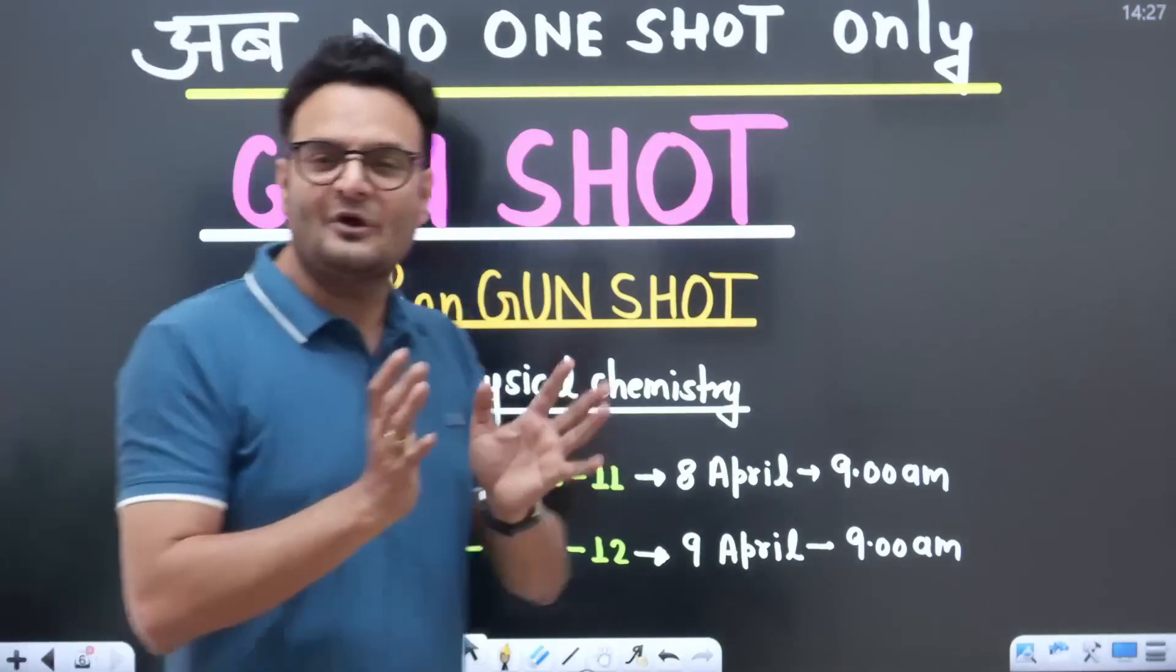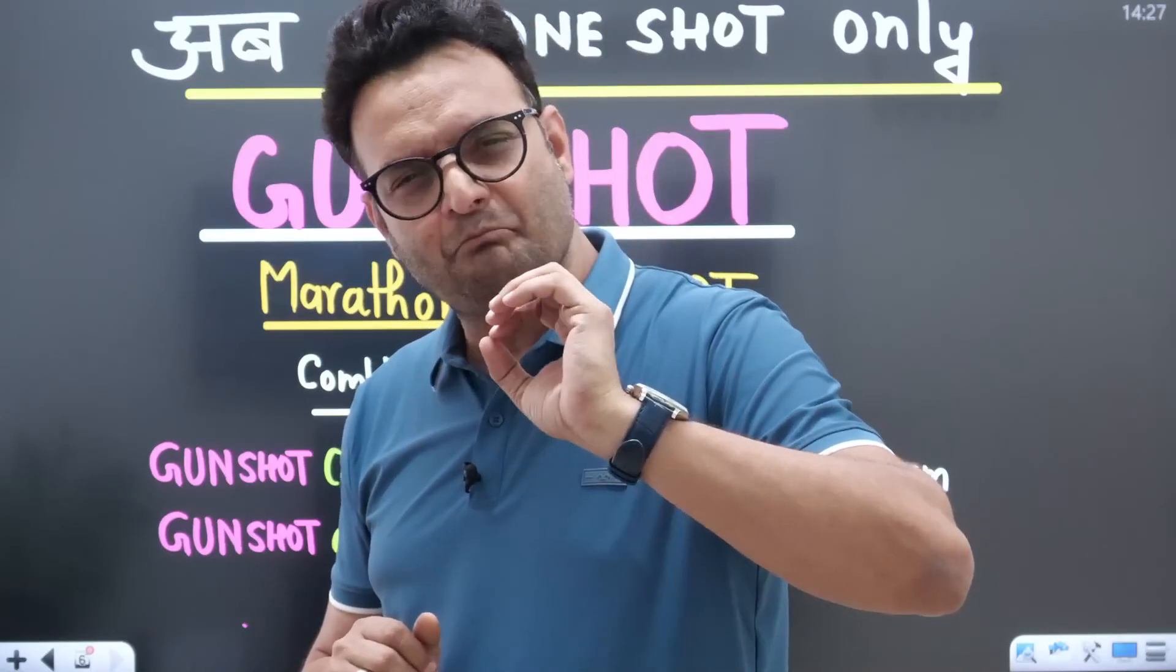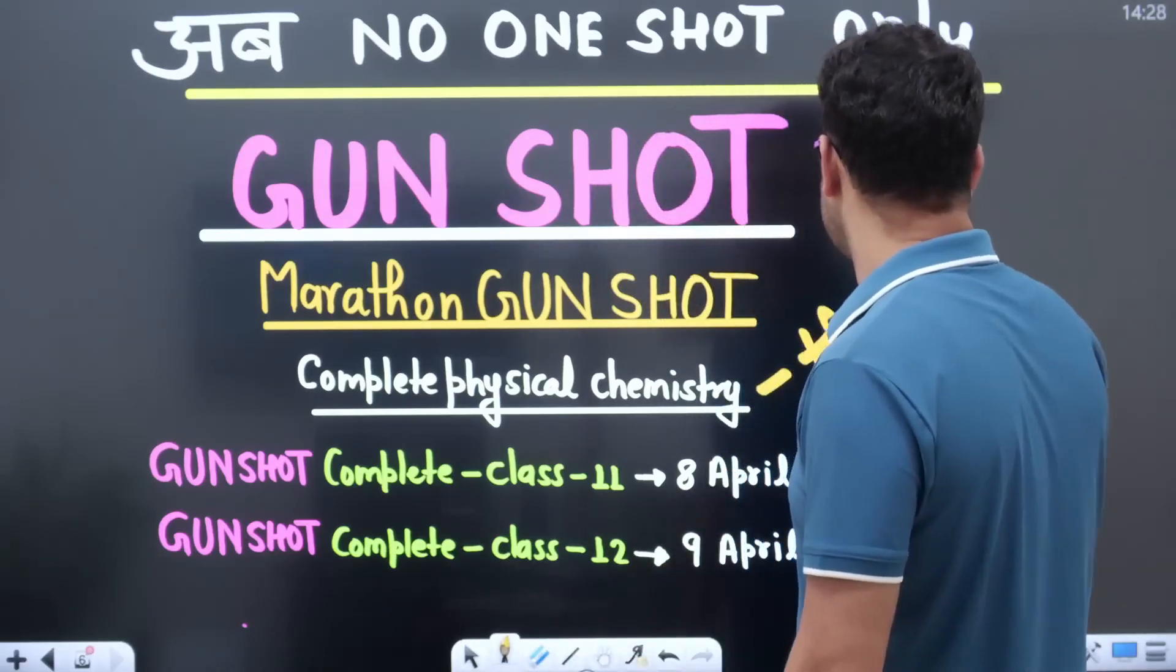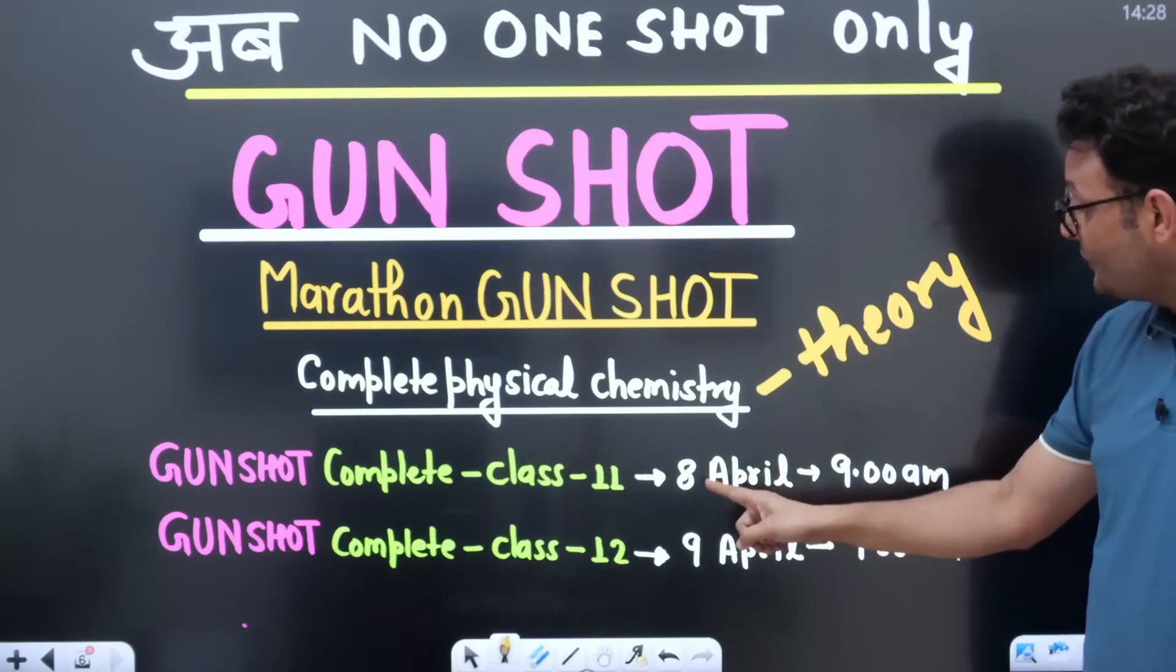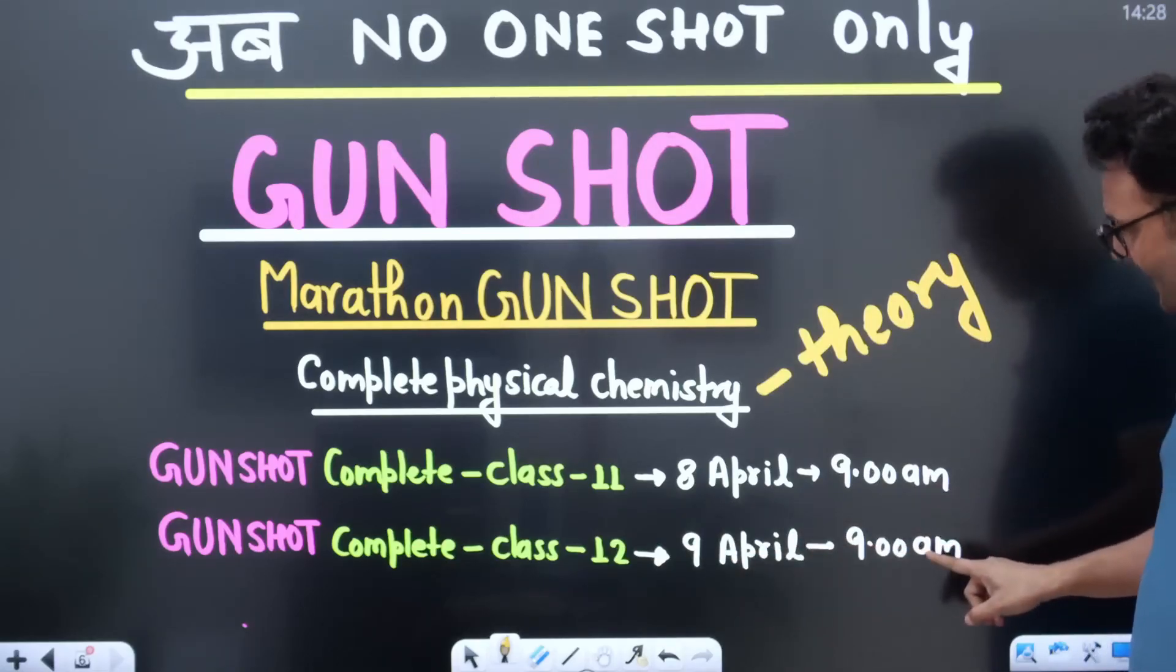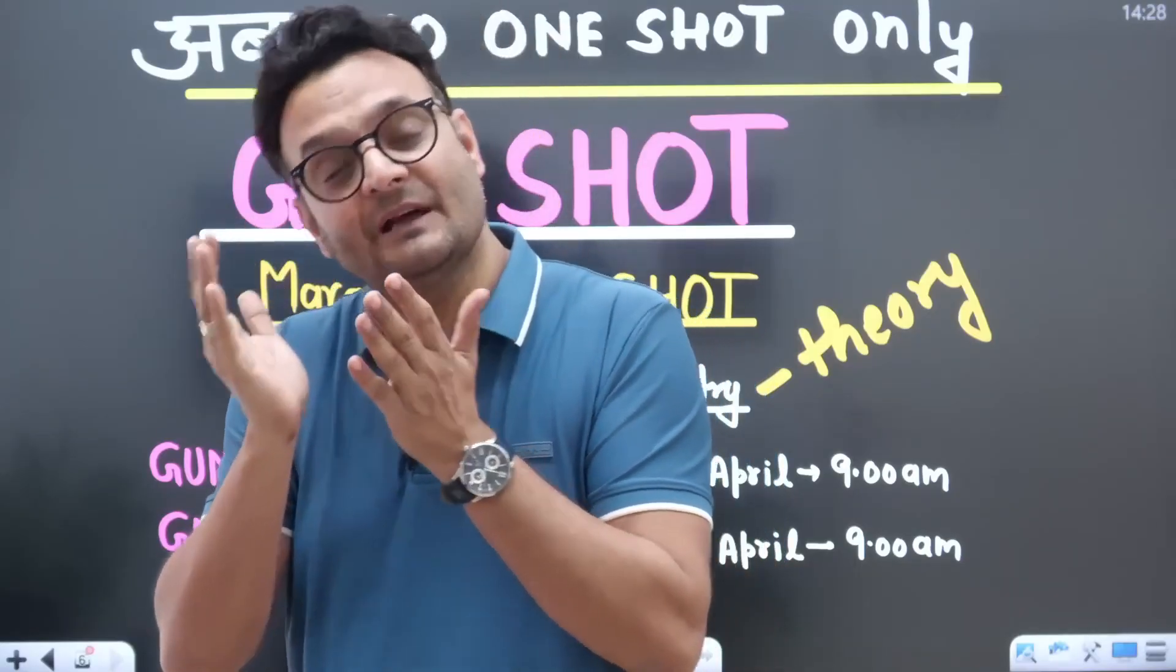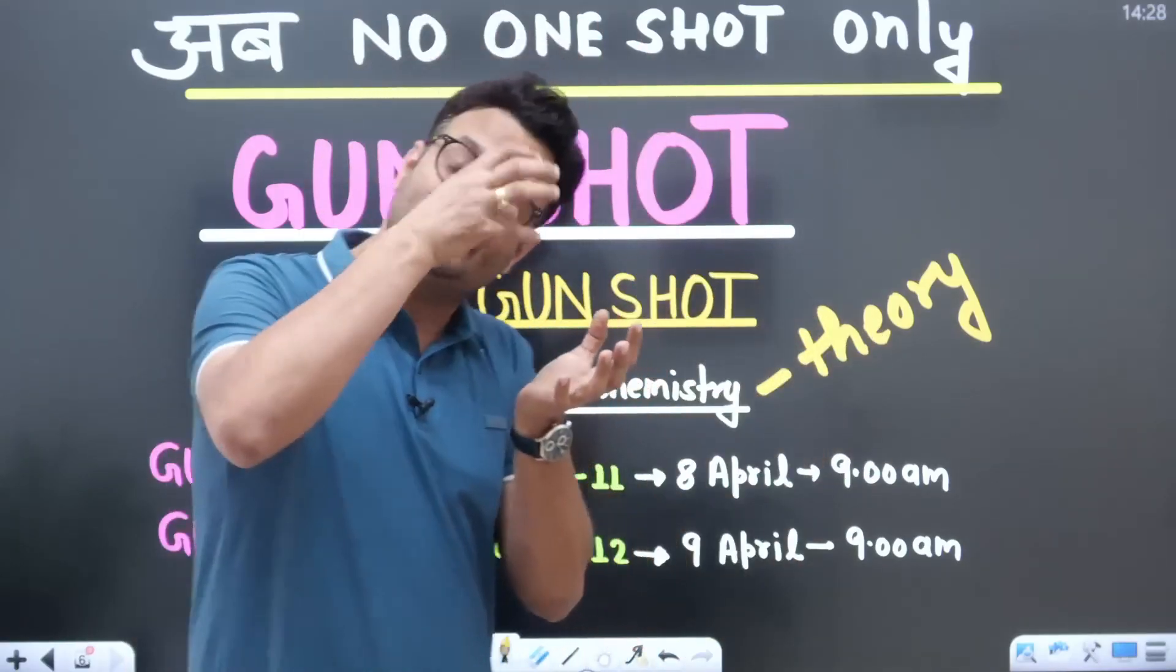In this, I will help you one more thing that we have done all the one-shots now. Now we are starting with the gunshots. After the one-shot, there is a gunshot. The gunshot will run like a bullet. In just two days, I will revise the whole theory of physical chemistry. I will revise the entire theory of physical chemistry in two gunshots. I will make you do small theoretical questions. I will bring small theories in the form of small theoretical questions and I will revise the entire theory in the form of theoretical questions.